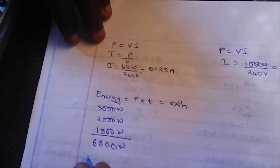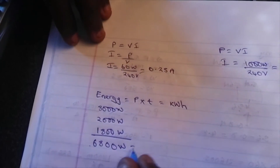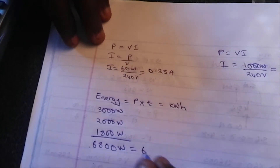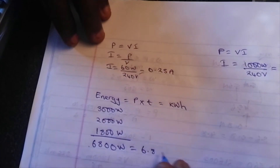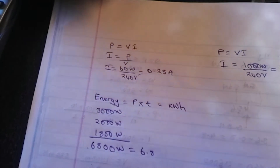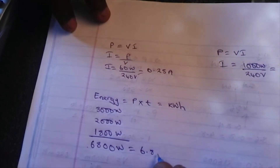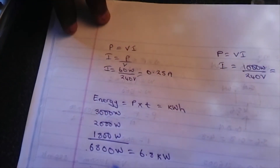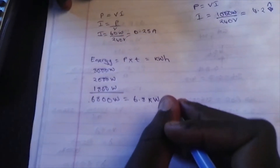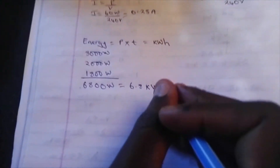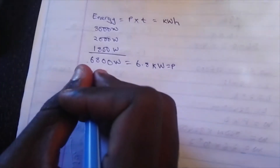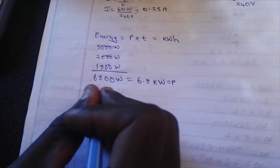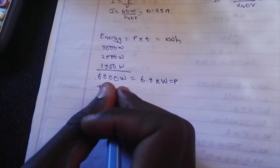In kilowatts, it will be 6.8 kilowatts — dividing by 1,000 of course. And then we've got 5 hours. So this is the power, and the time is 5 hours.